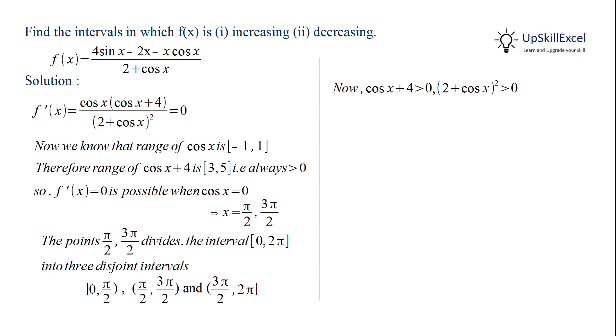Now observe f prime x. We see that cos x plus 4 is always greater than 0, and in the denominator 2 plus cos x whole square is also always greater than 0. That is, the sign of f prime x depends only on the sign of cos x.